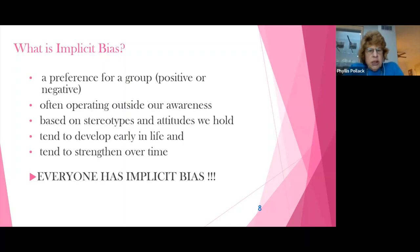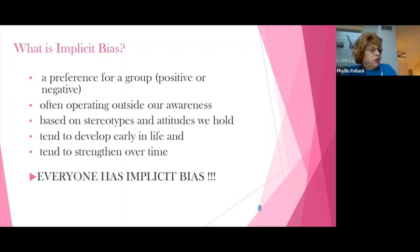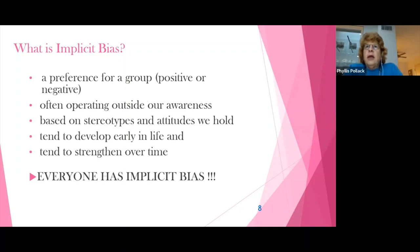Implicit bias — a definition of implicit bias is that it is a preference for a group. It's something that operates outside of our awareness. It is based on stereotypes and attitudes. We tend to develop these biases early in life; studies show that as young as six to nine months, we develop these biases, and they tend to strengthen over time.